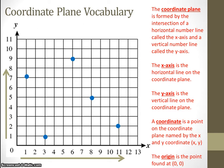Our last definition is the origin. This is the point that is found at 0, 0, or 0x and 0y. The green dot right here shows you where the origin is.